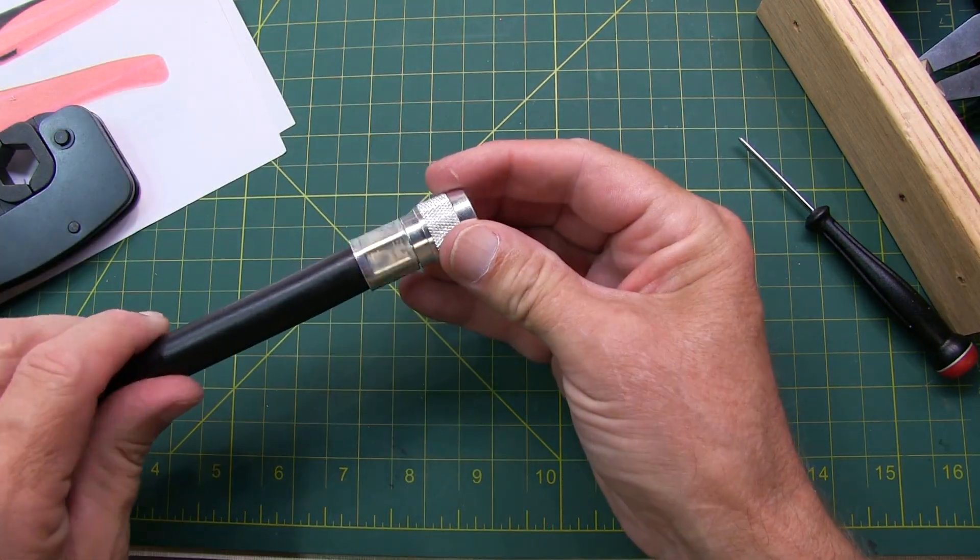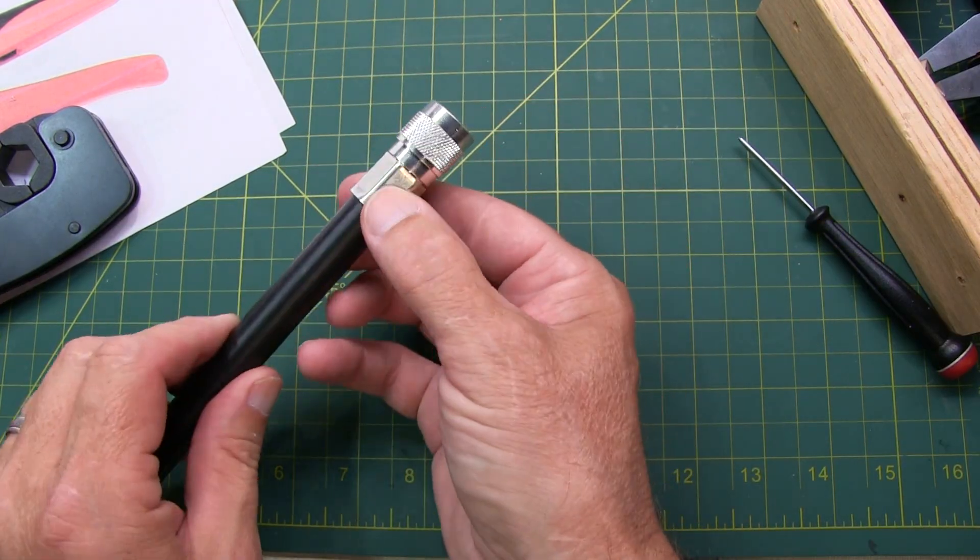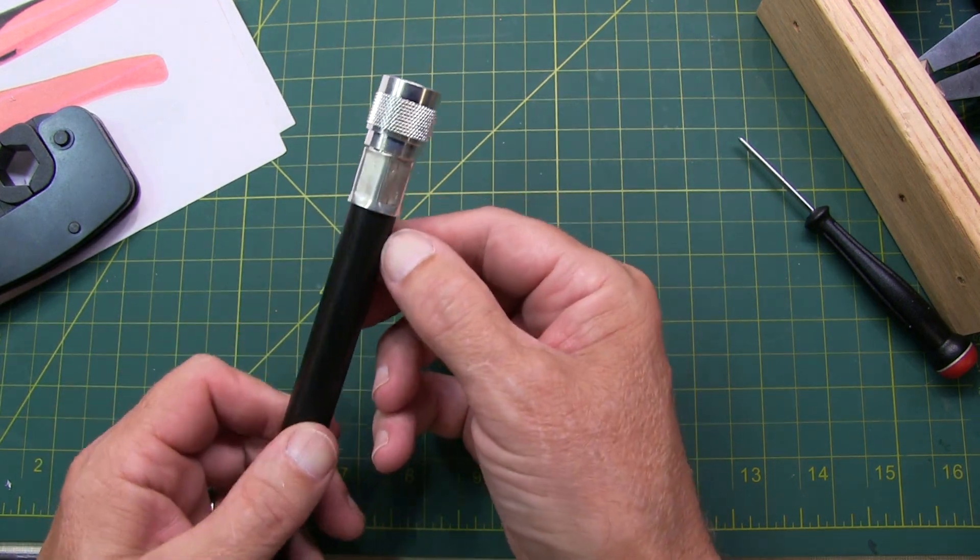And there we have the completed end connector on the 0.59 inch coax, RG217 or LMR600.